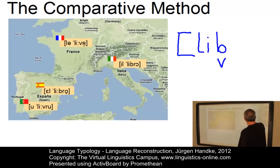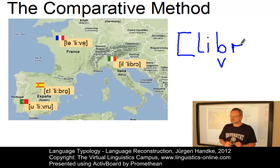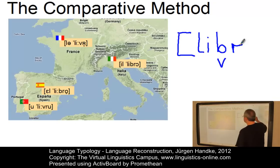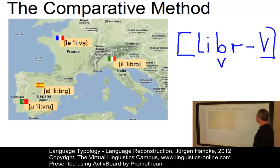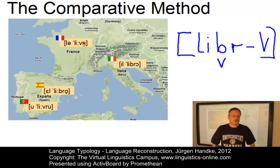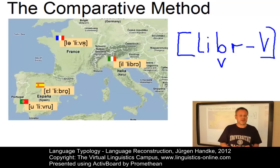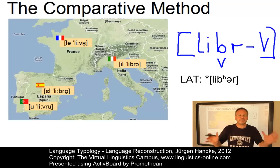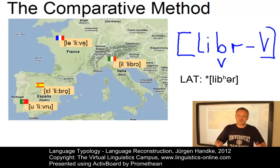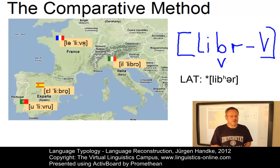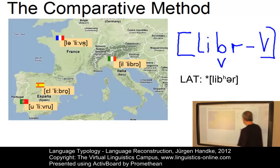And then we have some sort of R, which can either be alveolar or even uvular or velar. And then in some of these languages we have a final vowel. If Latin, the common ancestor language to these Romance languages, no longer existed, it would thus be possible to reconstruct a proto-word such as 'libre' or 'livre', perhaps with a schwa between the L and R to ease articulation. That proto-word would be very close to the real word in Latin, which is of course 'liber'.